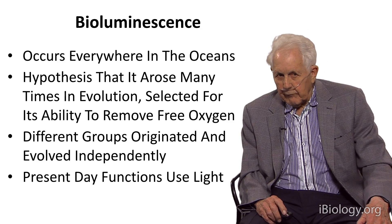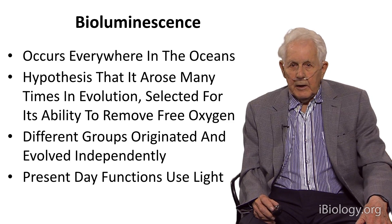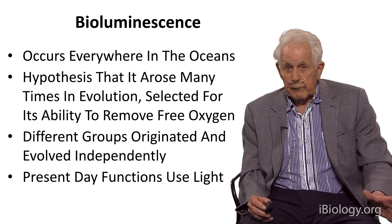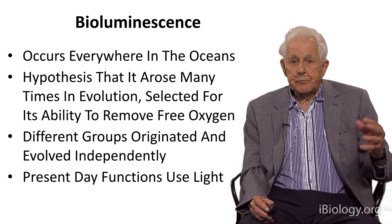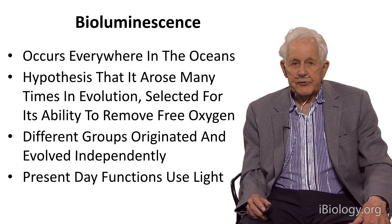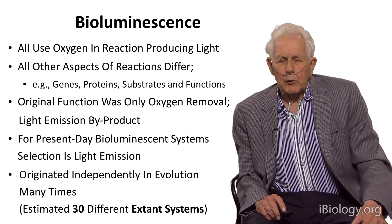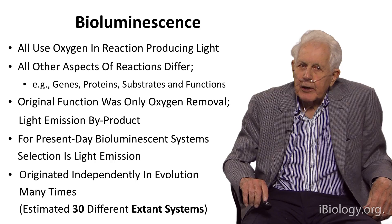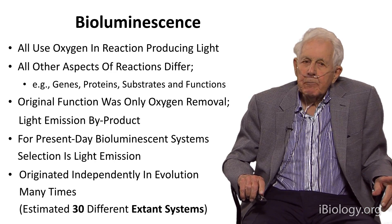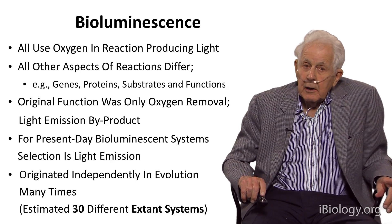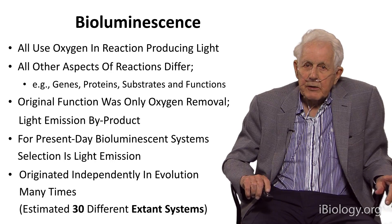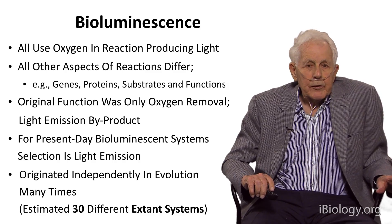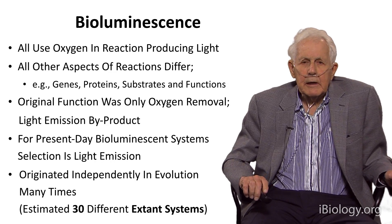Different groups of bioluminescent organisms originated and evolved independently, we believe. Present-day functions use the light for functional purposes, so light is the selection factor. All use oxygen in the reaction mechanism, producing light. But the remarkable thing is that in the different organisms — and there may be as many as 30 still extant today — all other aspects of the reaction differ: the genes, the proteins, the substrates, and the functions. The original function, we hypothesize, was only oxygen removal.